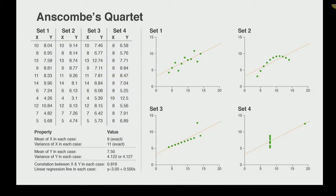Why can't we just use statistics? This is Anscombe's Quartet from 1973. Statistics don't always communicate all the information we need. All four of these graphs have the same variance, mean, correlation, and linear regression — but they look completely different when graphed. This is why we graph data.